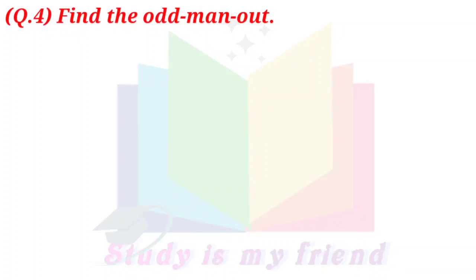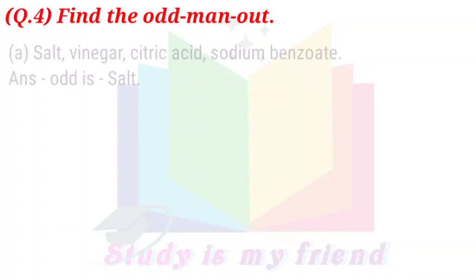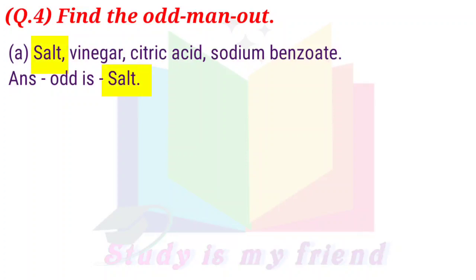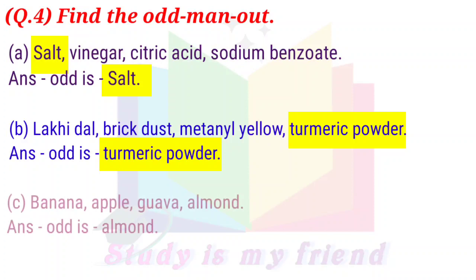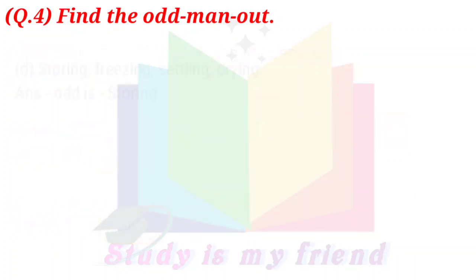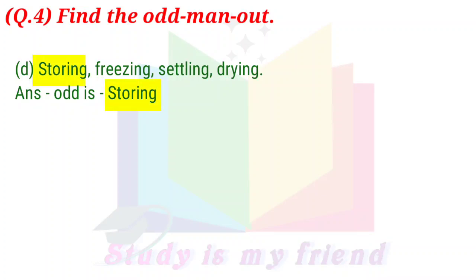Question 4: Find the odd one out. A. Salt, vinegar, citric acid, sodium benzoate. Answer: Odd is salt. B. Lucky dal, brick dust, metanil yellow, turmeric powder. Answer: Odd is turmeric powder. C. Banana, apple, guava, almond. Answer: Odd is almond. D. Storing, freezing, settling, drying. Answer: Odd is storing.